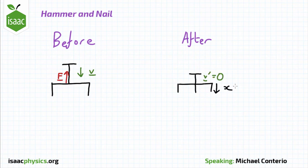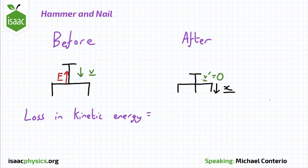All of the kinetic energy of the nail has been converted into heat energy. The loss in kinetic energy of the nail is equal to the work done against the force by the nail, which is equal to f times x.